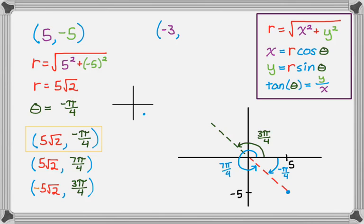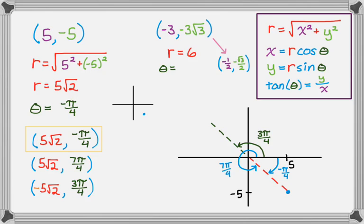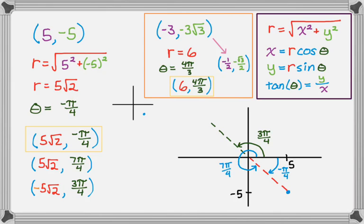Let's look at one more example: the point (-3, -3√3). Hopefully you can get that R equals 6. For theta, any angle passing through the original point also passes through (-1/2, -√3/2) on the unit circle, and I know that angle is 4π/3. So this point can be written as (6, 4π/3). But again, I could use theta = -2π/3 with R = 6, or theta = π/3 with R = -6. Lots of different representations.